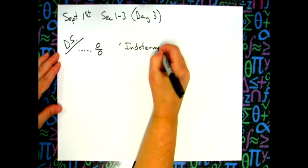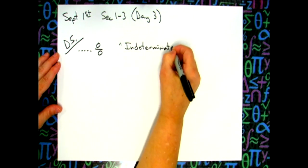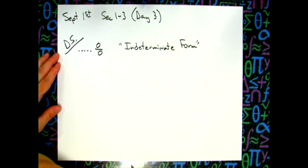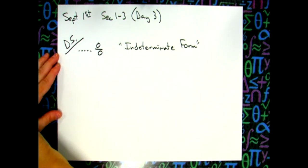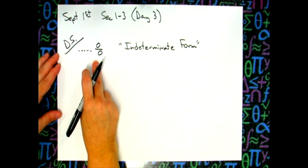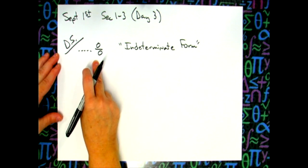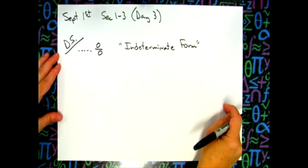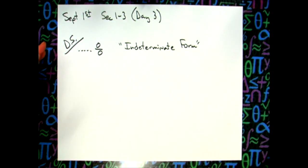We're going to get lots of different types of indeterminate forms, but for right now, since we're taking an algebraic approach to our limits, this is the first one we're going to encounter. When you do your direct substitution and get zero over zero, you don't know what the answer is yet — all it's telling you is that you have to do something else in order to get the answer.